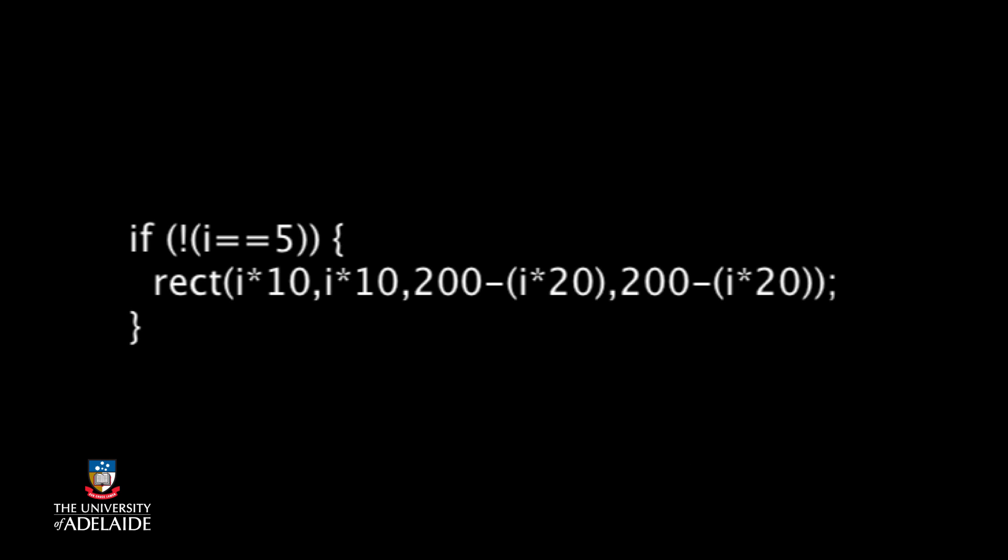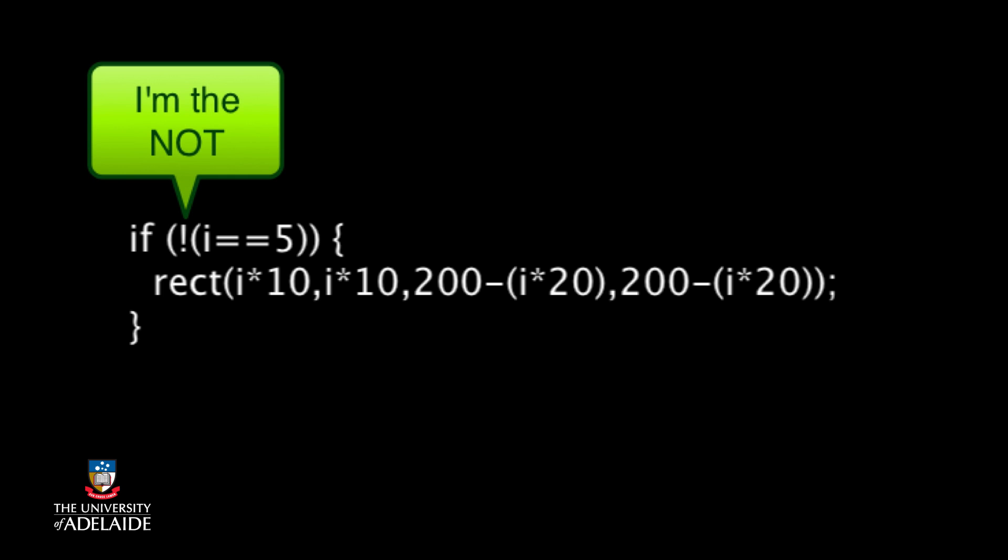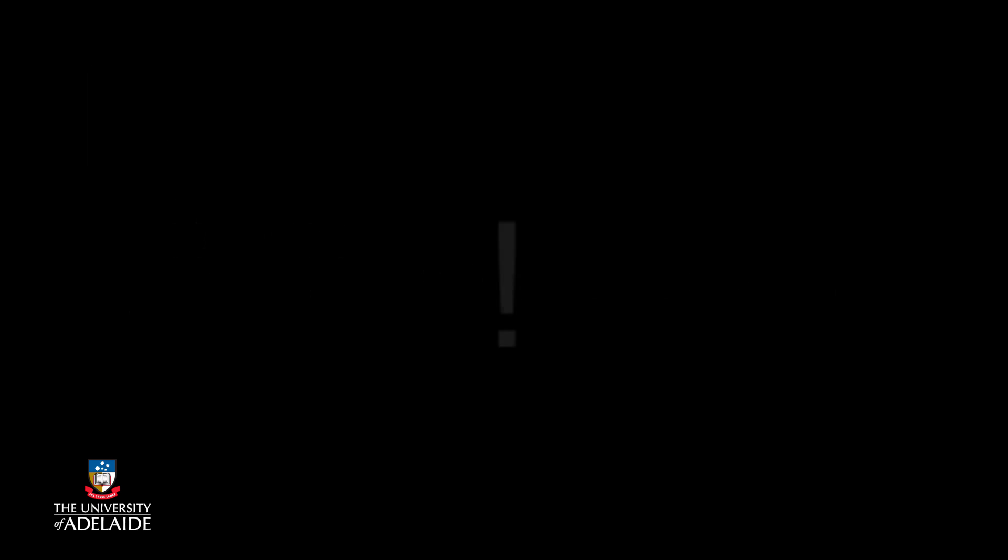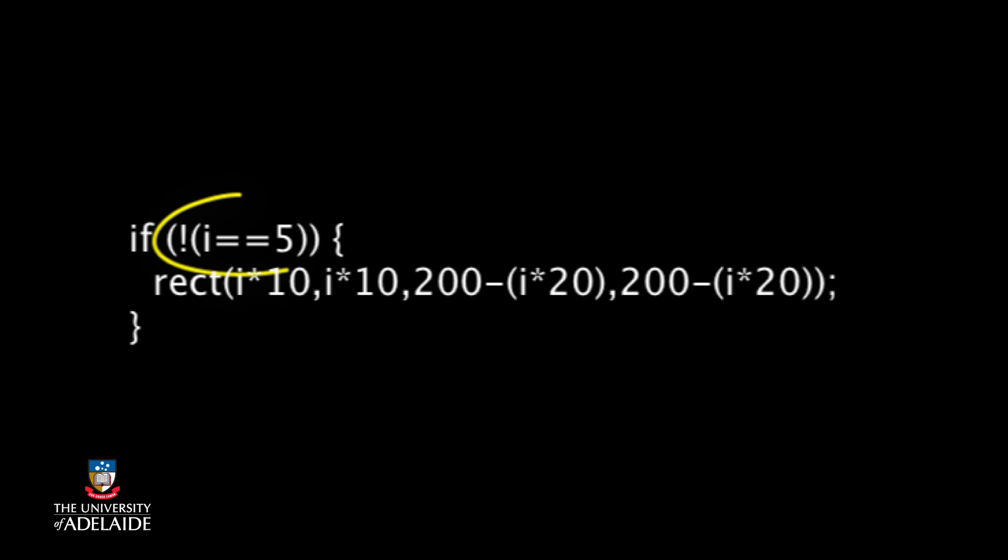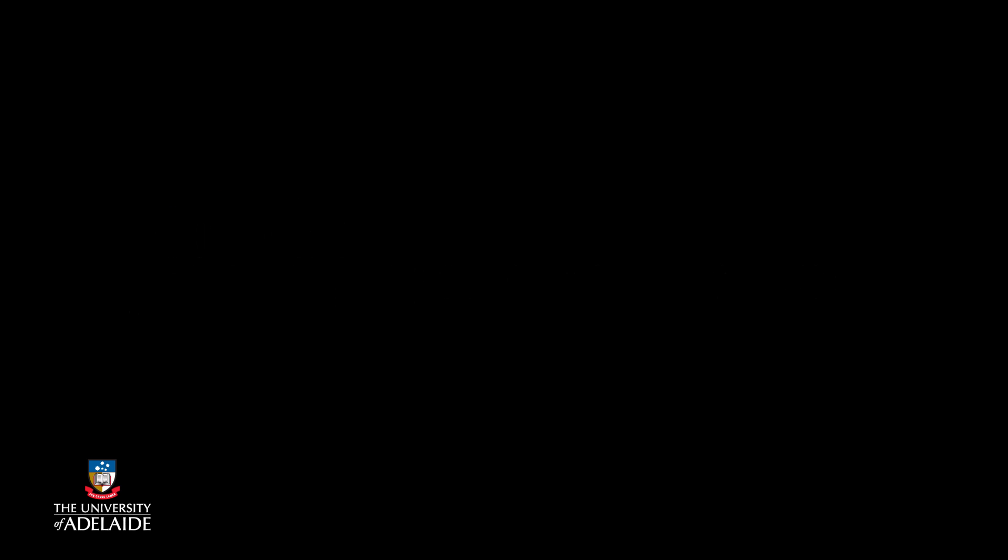Here's the comparison operator checking the value of i against the value of 5, but combined with the NOT operator, which in processing is an exclamation mark. That condition says negate the value of the result of checking to see if i is 5, so if i is true, it will return false. Therefore, if i is 5, the overall condition will be false and we will not draw a rectangle. That looks like this.